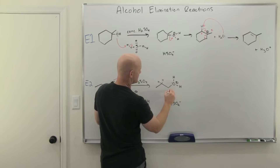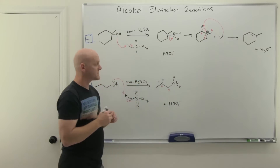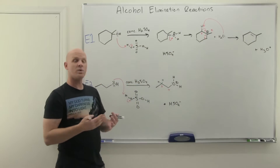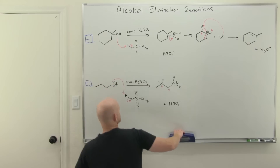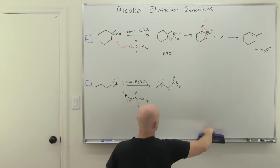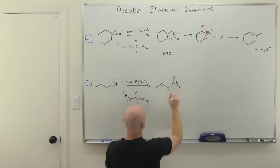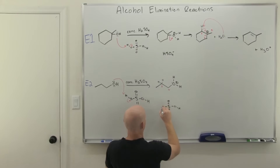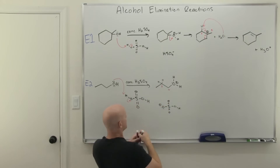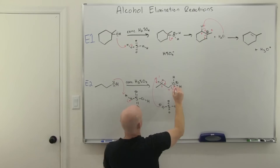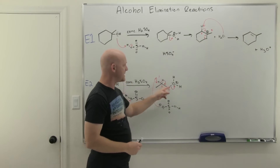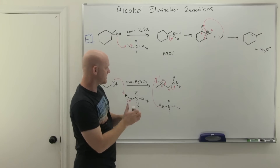Here's our alpha carbon, and the only adjacent carbon we have is the beta carbon. We're going to deprotonate one of those hydrogens — whichever one happened to be anti-periplanar. We deprotonate with our HSO4⁻. Just like an E2 reaction, you deprotonate, you form the pi bond, and the leaving group leaves all at the same time — it's a concerted mechanism.